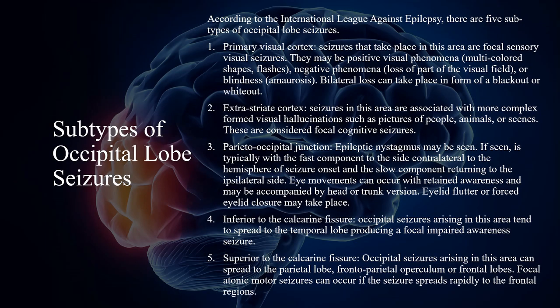According to the International League Against Epilepsy, there are five subtypes of occipital lobe seizures. The first is the primary visual cortex. Seizures that take place in this area are focal sensory visual seizures. They may be positive visual phenomena, negative phenomena, or blindness. Bilateral loss can take place in the form of a blackout or whiteout.